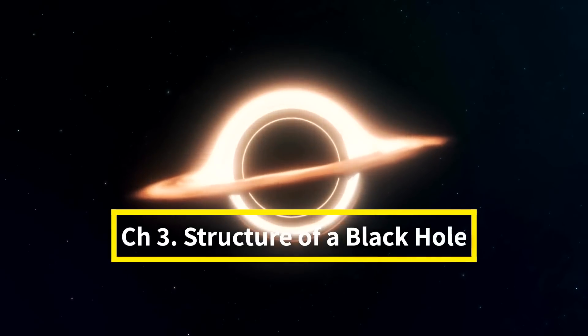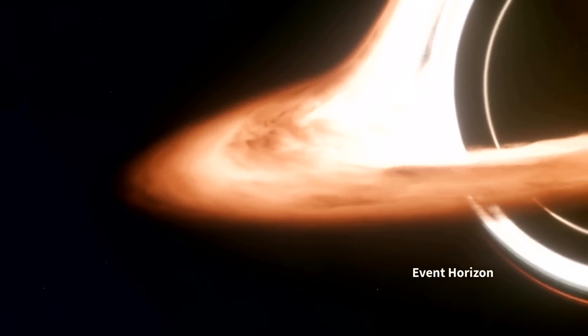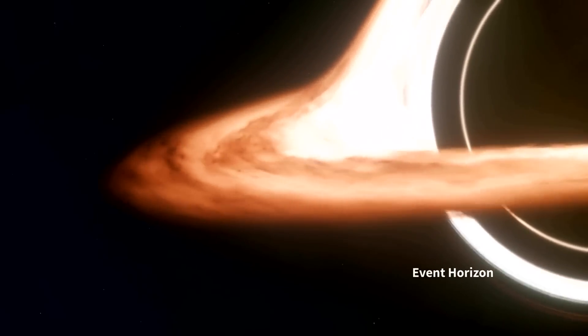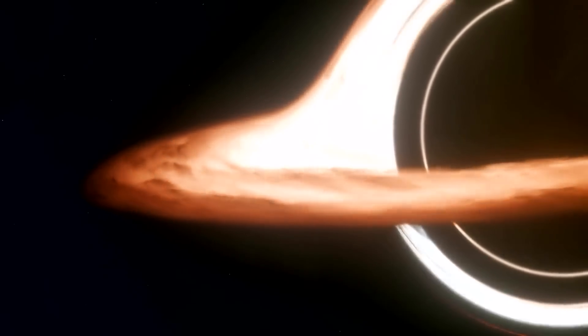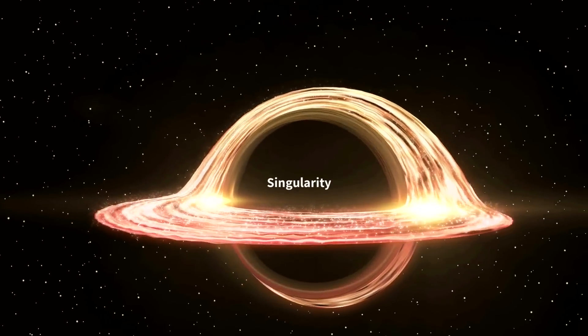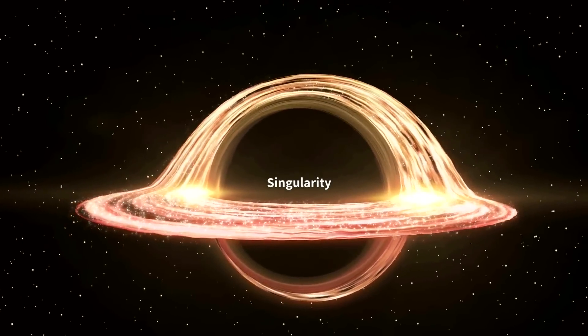Now let's take a closer look at the structure of a black hole. The event horizon is the boundary around a black hole that acts as the point of no return. Cross this, and you're not coming back.